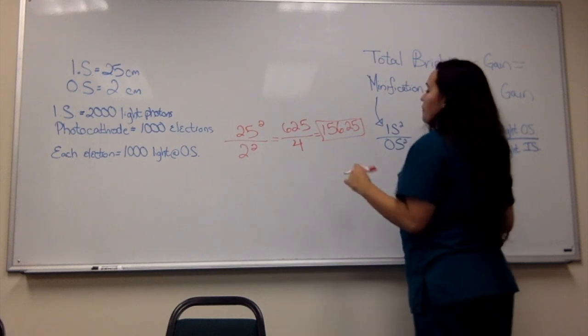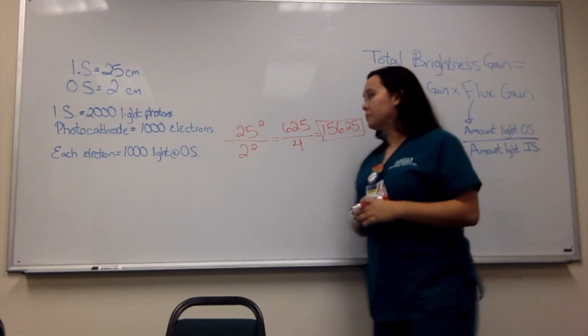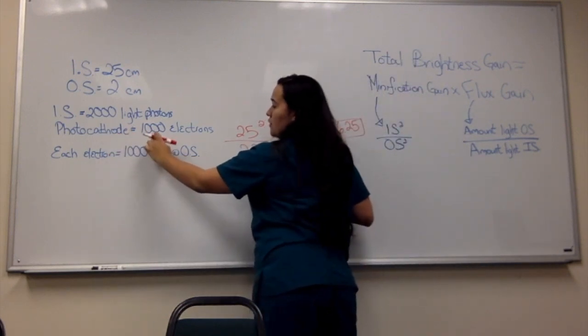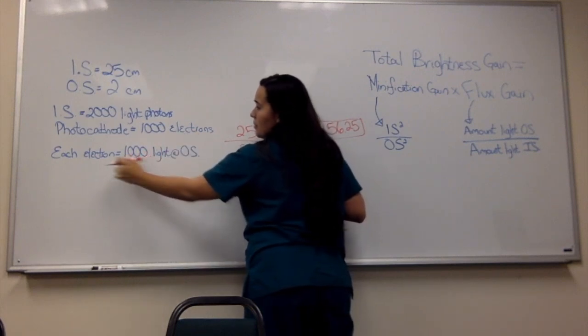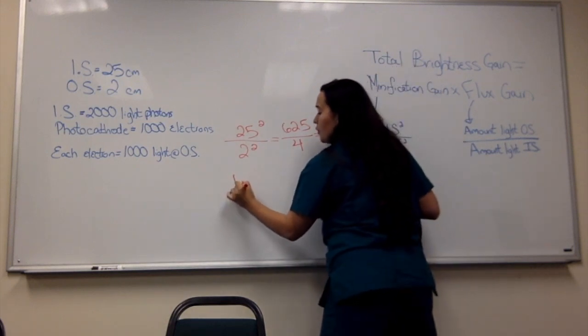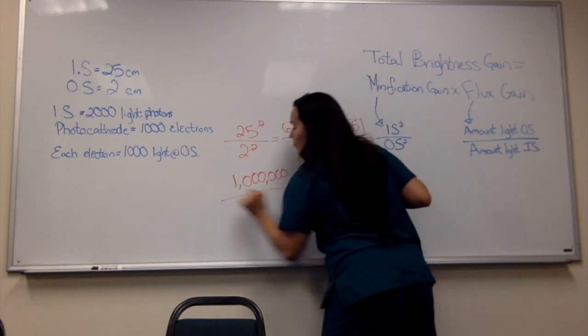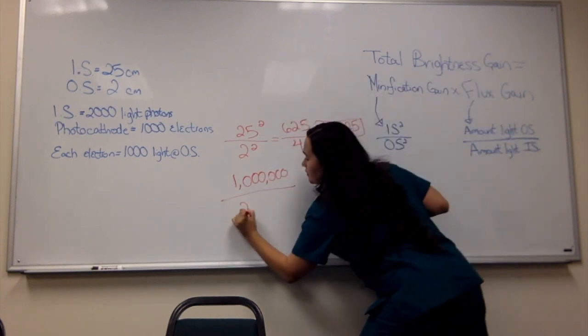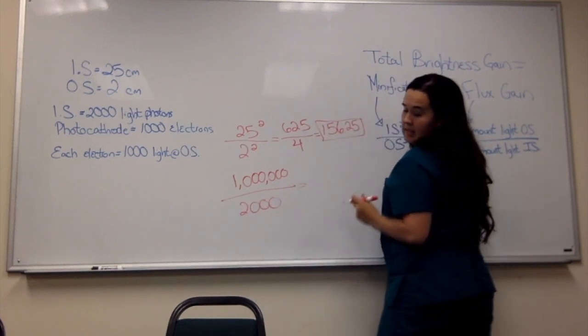Then I'm going to go over to the flux gain. For the flux gain, I need to find out how much light is given at the output screen. In order to do that, I need to look at the photocathode, which gives 1,000 electrons, and multiply by 1,000 because each electron gives out 1,000 light photons. So when you multiply that, that's going to give you 1 million. And I'm going to divide that by the amount of light at the input screen. When I do the math on that, it's going to give me 500.